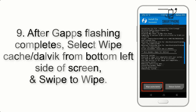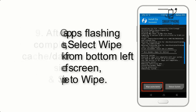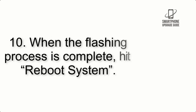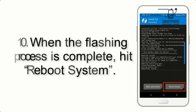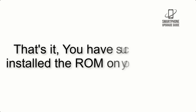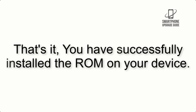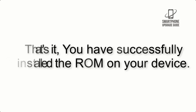Step 8: Flash the GApps zip package in the same manner. Step 9: After GApps flashing completes, select Wipe Cache and Dalvik from the bottom left side of the screen and swipe to wipe. Step 10: When the flashing process is complete, hit Reboot System. That's it — you have successfully installed the ROM on your device.